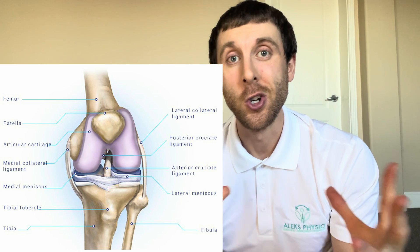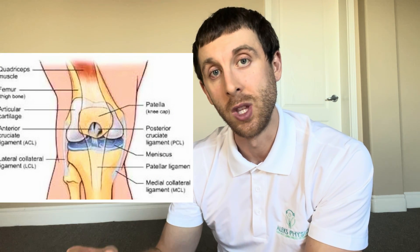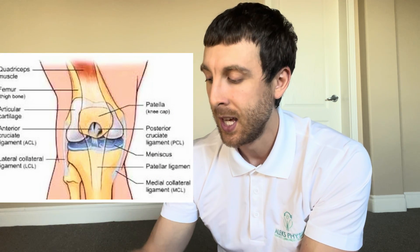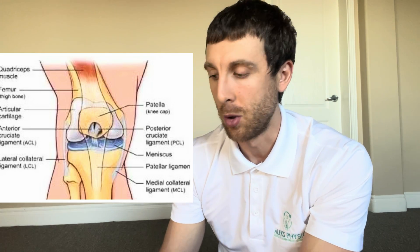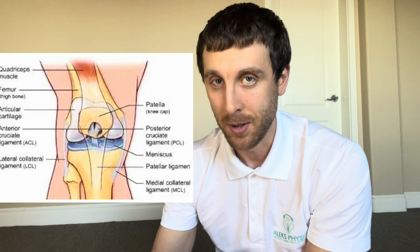The kneecap is the largest sesamoid bone in our body. It is triangular shaped and also known as the patella. The main function of the kneecap is to improve the efficiency of our quadricep muscle, which is the muscle located on the front of our thigh. It is embedded within the quadricep muscle, which then turns into the patellar or quadricep tendon, which attaches to the top of our shin bone called our tibial tuberosity via the patellar ligament.